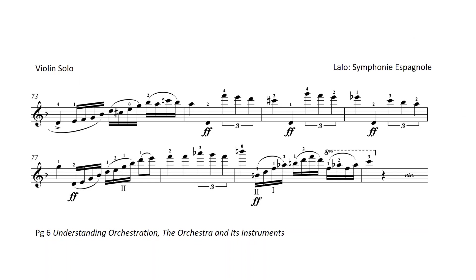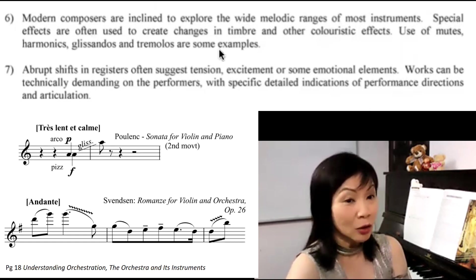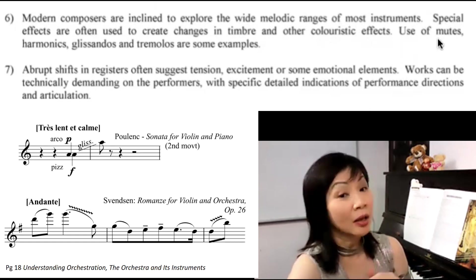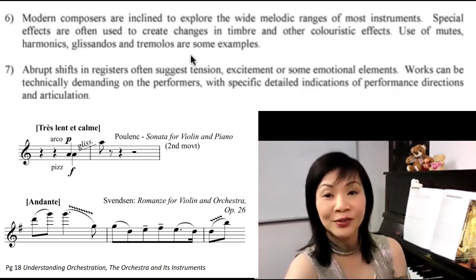Modern composers will also be more inclined to explore wide melodic ranges of most of the instruments. Some of the instruments may use different types of coloristic techniques, such as mutes, harmonics, glissandos, tremolos, and so on. Here I have another textbook which I would recommend for you — Understanding the Orchestra and Its Instruments — where a lot of the instruments are introduced with various playing techniques and features.